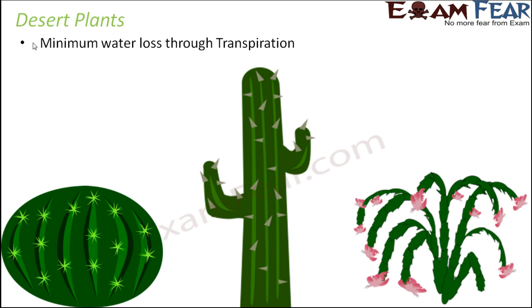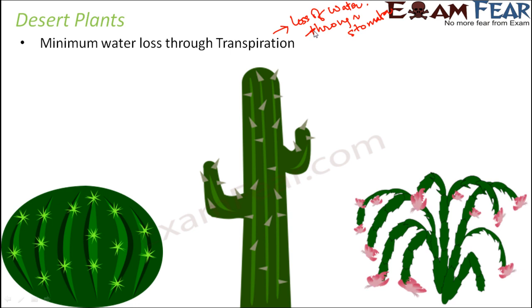For example, there is minimum water loss through transpiration. In any normal plant, transpiration is the loss of water through the tiny pores on the leaves which are called stomata. Plants throw out excess water into the atmosphere through transpiration. But desert plants do not get water anyway, so they do not want to lose any. In these plants the leaves are modified to structures called spines. Since there are no leaves, there are no stomata, and therefore transpiration is very minimum, so water loss is very less.